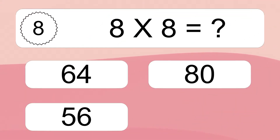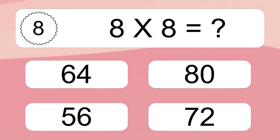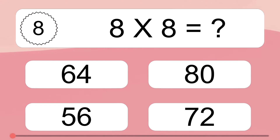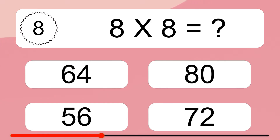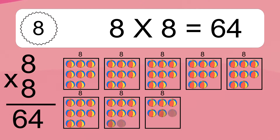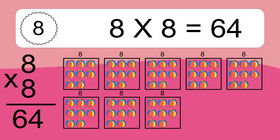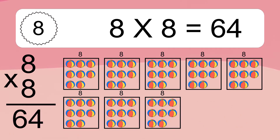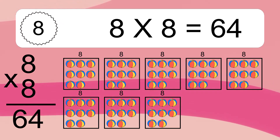Eight times eight equals what? Eight times eight equals 64. We have eight boxes, and each box has eight colorful balls inside. If you count all the balls in all the boxes together, you will have eight times eight balls. This equals 64 balls.